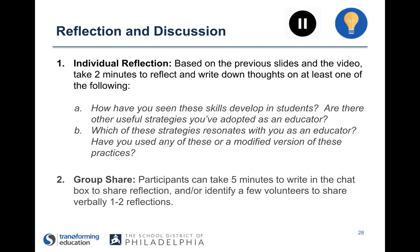Let's take about seven minutes total. Do a couple minutes of individual reflection — think back to the previous slides and those strategies. How have you used some of these strategies? How have you seen these skills develop in students around social awareness? Are there other useful strategies you've adopted that weren't mentioned? Then we'll come back together as a large group for five minutes to write in the chat box or share verbally. I'll ask the facilitator to pause now and press play in around seven or eight minutes.